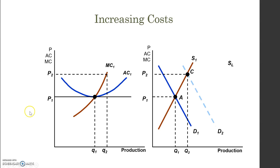Imagine demand increases and shifts to the right. In the market, the price increases to P2 and the quantity exchanged increases. At this higher price the firm can produce more and earns positive profits.